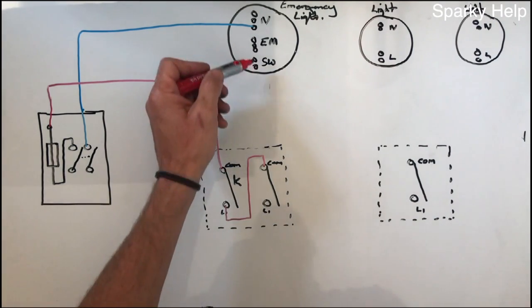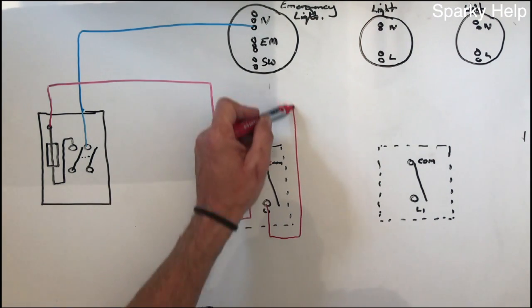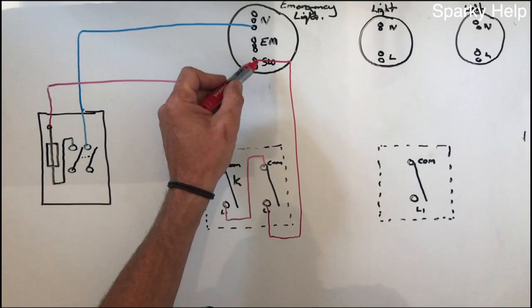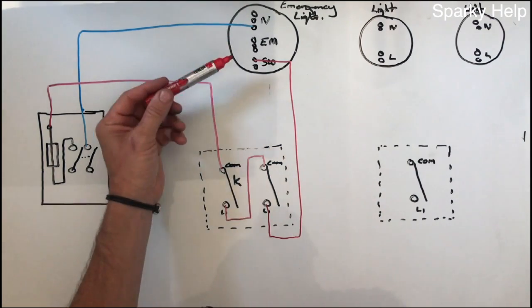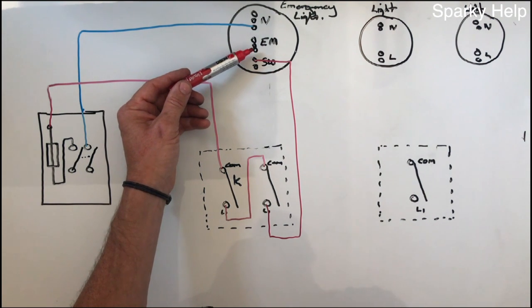Okay, so what we need is we need a switch line to come up to this one here. So this will come outside of that switch and connect into the switch line, which will bring this light on.